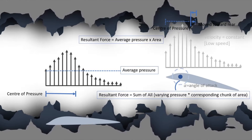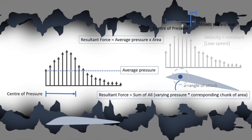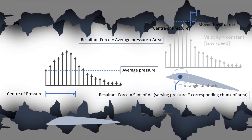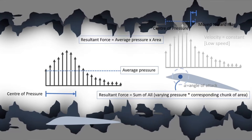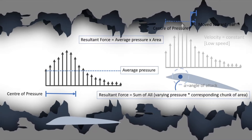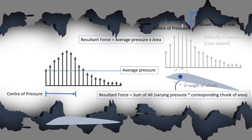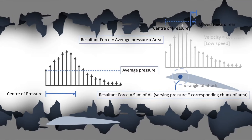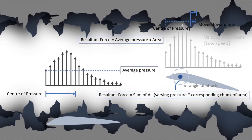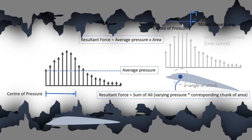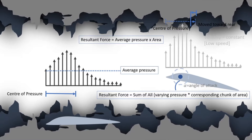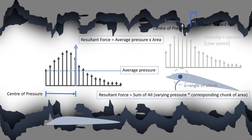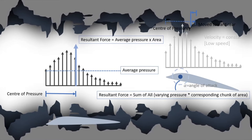These arrows are the lift distribution over the top surface of the aerofoil. To locate the center of pressure, think of all the varying pressure at each chunk of area as a force. The magnitude of these forces can be found using pressure multiplied by the corresponding chunk of area.